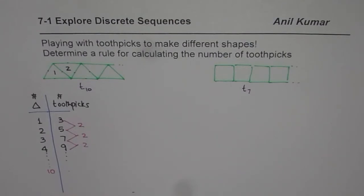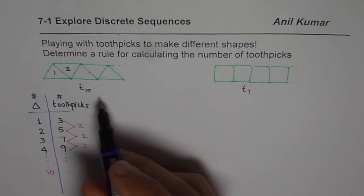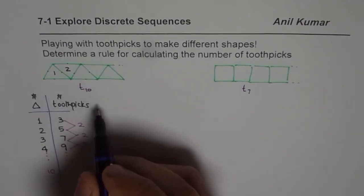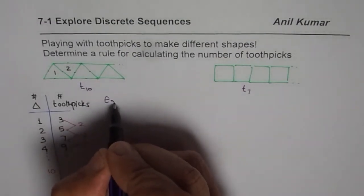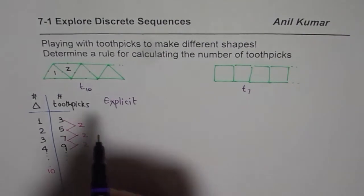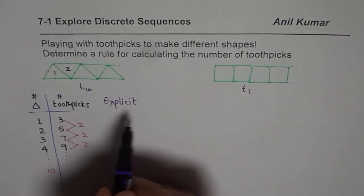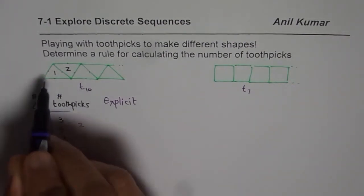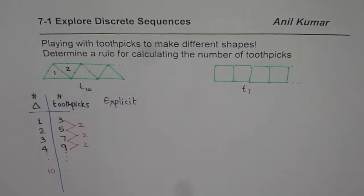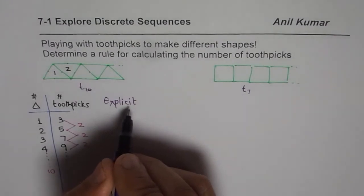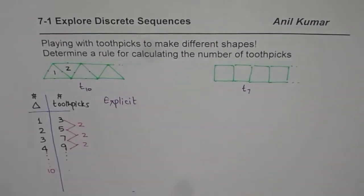The other way of doing the same question is to get a general formula — we call it an explicit formula. That is to say, we find a rule so that immediately, as soon as I put ten for the number of triangles, I get my result. That is what we will do in this particular video.